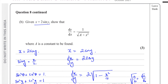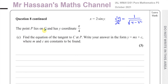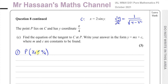Now we go on to part c. Part c tells us that point p lies on curve c and has y-coordinate pi over 4. We need to find the equation of the tangent to c at p in the form y = mx + c. To find the equation of a tangent we need two things: the point p, and the gradient. We already have y = pi over 4, so we need the x-coordinate of p. We also need the gradient, which we find using dy/dx from part b.